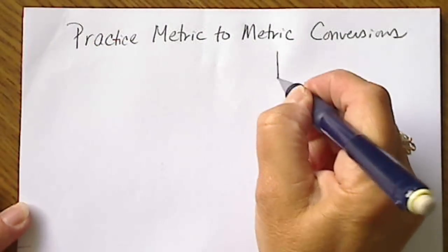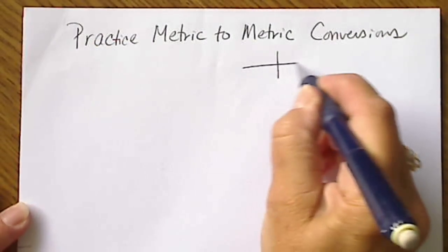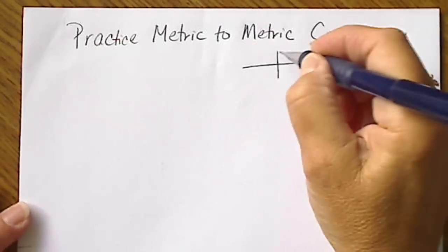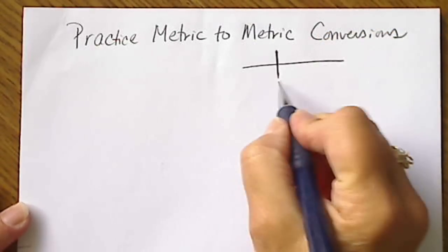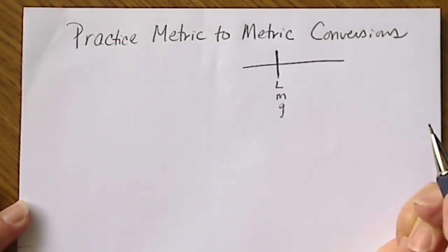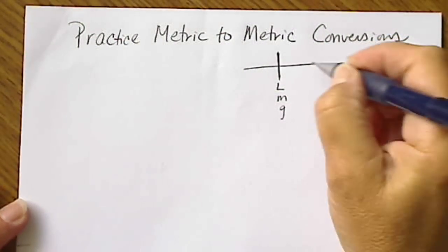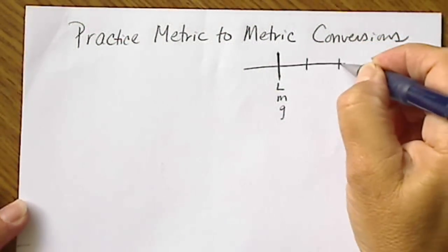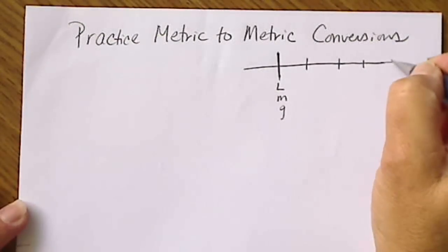So when we sit down to take a quiz or anything, we're going to put the basic unit right here, and again, this could be liter or meter or gram. Then we're going to remember the order: milli, micro, nano, pico.